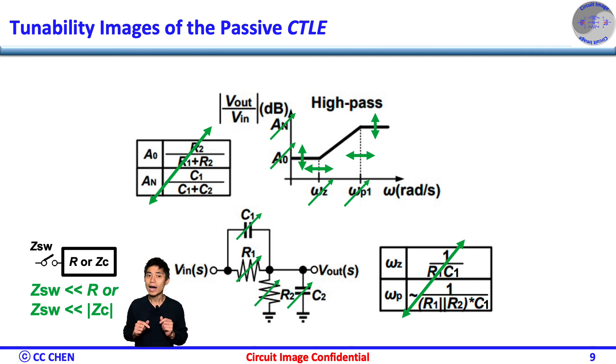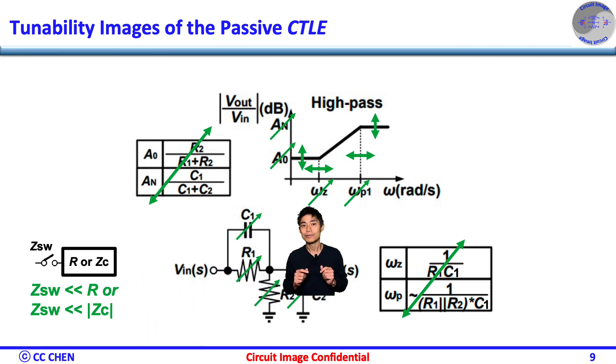The last beauty of the RC network is that we could vary the values of the R1, R2, C1 and C2 respectively. Therefore, the tuned DC attenuation, high-frequency attenuation, peaking gain, zero and pole frequencies can be implemented independently. Therefore, the passive CTLE's high-pass response may have more flexibility or tunability to be the inverse of the channel's low-pass response properly.